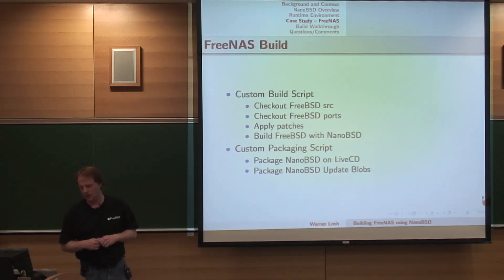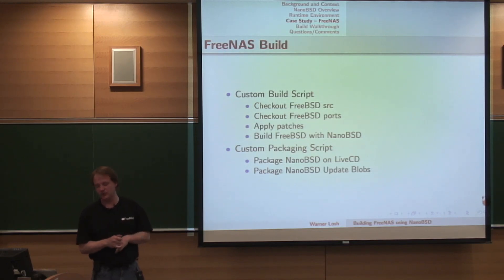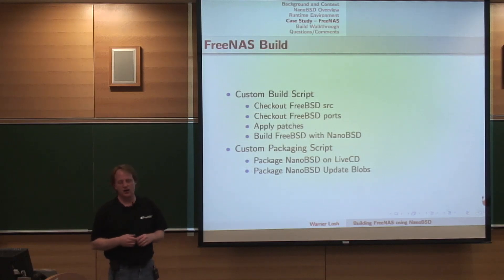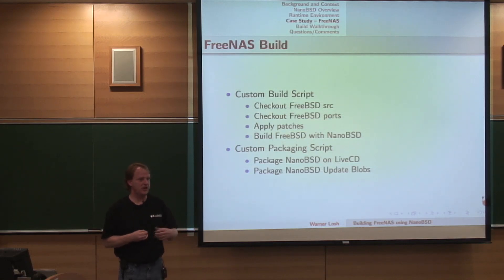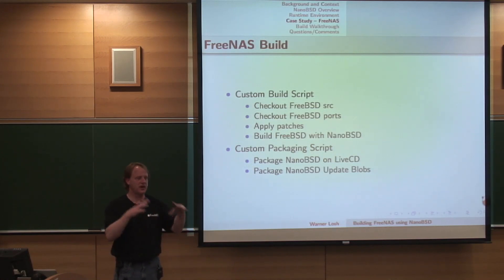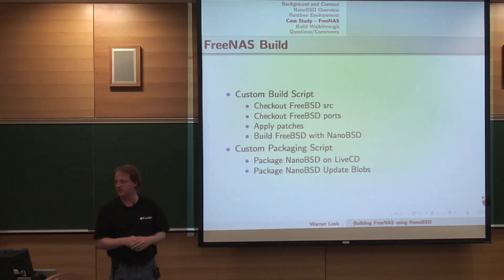We have two custom scripts that we use. One is the build script — this creates the cvsup file, pulls down the right version of FreeBSD either from a local mirror or remotely, so we know exactly the sources we have. It applies a number of patches on top of that needed for FreeNAS — fixing a few bugs, maybe adding a few features. In FreeNAS 8.1, this will be used to add the ZFS 28 patch set on top of whatever stable FreeBSD is built, assuming the patch set is stable — it's looking good, so it'll probably be included in 8.1.